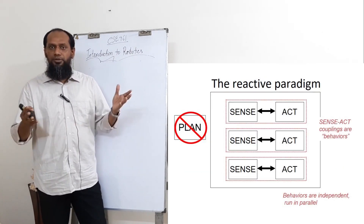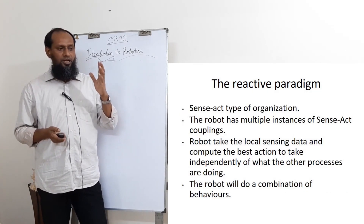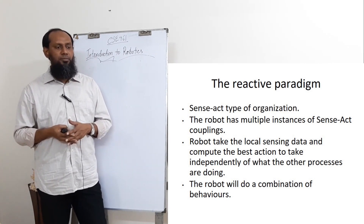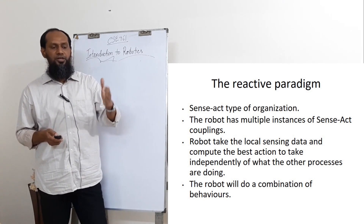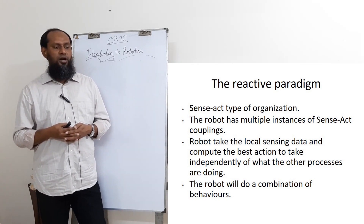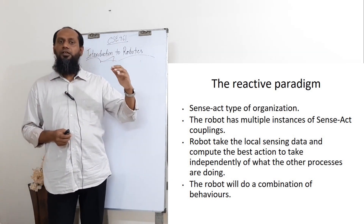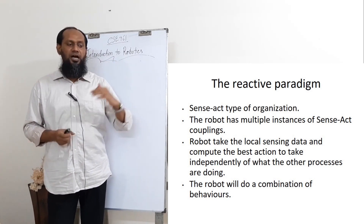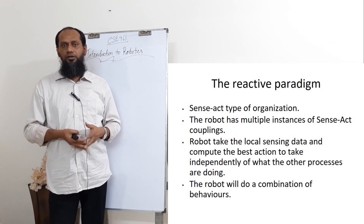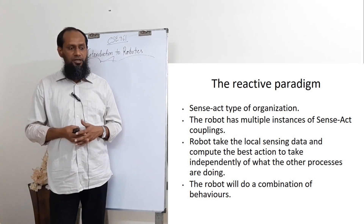The reactive paradigm is very simple: sense and act. We can have a number of different systems, each sensing and acting with no planning. This is a sense-act type organization. The robot has multiple instances of sense-act coupling — you can see three instances here. Each robot takes local sensing data and computes the best action independently of what other processes are doing. Each system is totally independent from the others; the first is not taking care of the second, and vice versa. So there is no global planning.